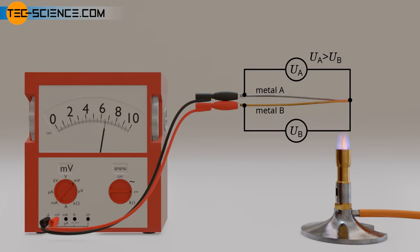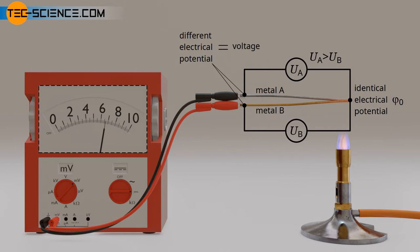Since the two metals are connected to each other at the measuring junction, they are at the same electric potential. As a result, the electric potentials at the reference junction differ, and an electrical voltage is caused that can be measured with a voltmeter.